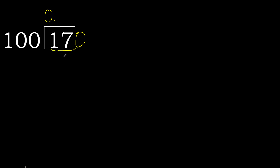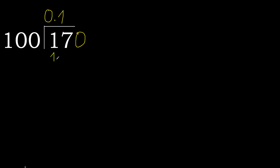170 is not less, therefore bring 170 here. 100 multiplied by which number is nearest to 170 but not greater? 100 multiplied by 2 is 200 — is greater. Multiplied by 1 is 100 — is not greater.